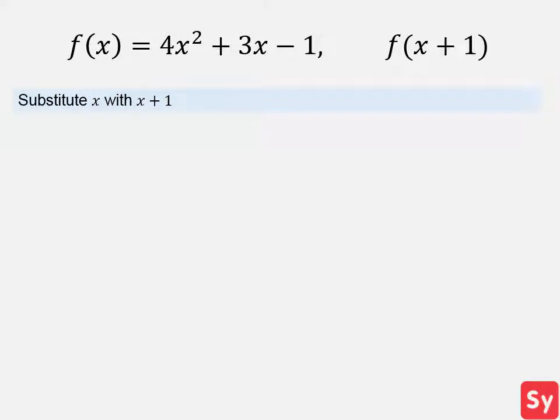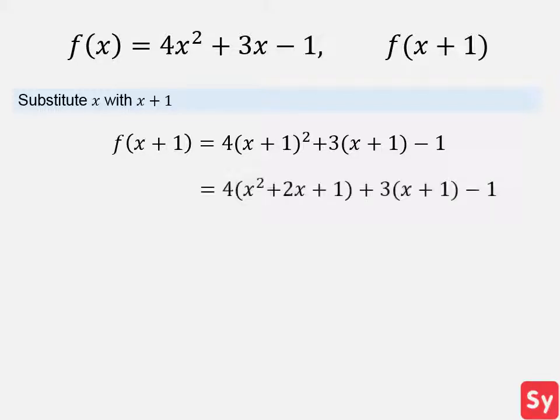First, we substitute x with the argument. So we plug in x plus 1 for x. Now we simplify. First, we expand x plus 1 squared. Then we multiply. Then, we combine like terms and get 4x squared plus 11x plus 6, which is our answer.